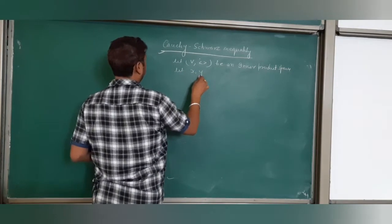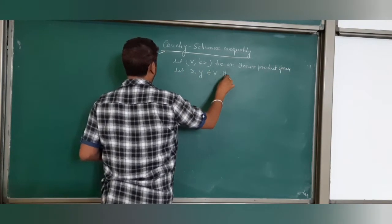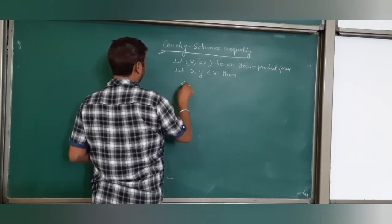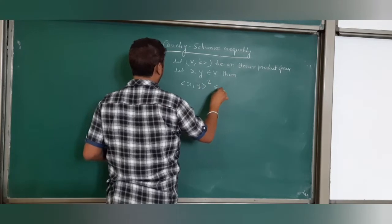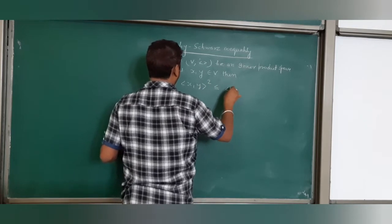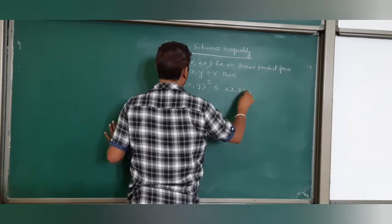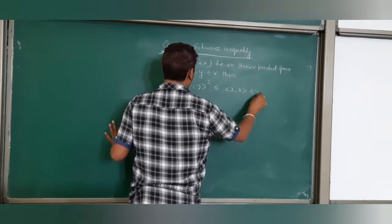For X, Y belongs to V, the inner product of X, Y squared is less than or equal to the inner product of X, X times the inner product of Y, Y.